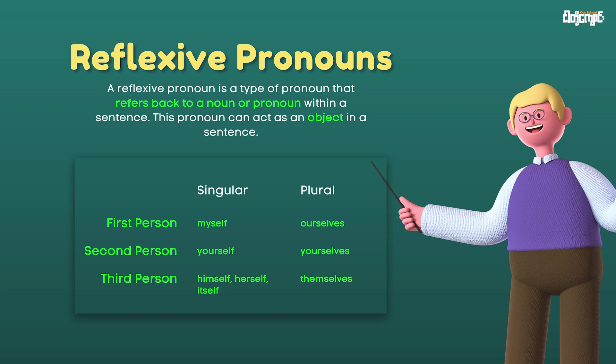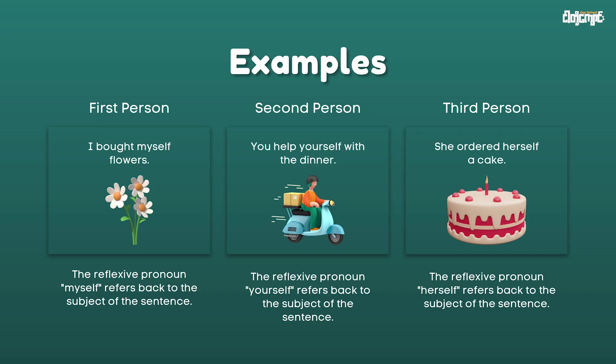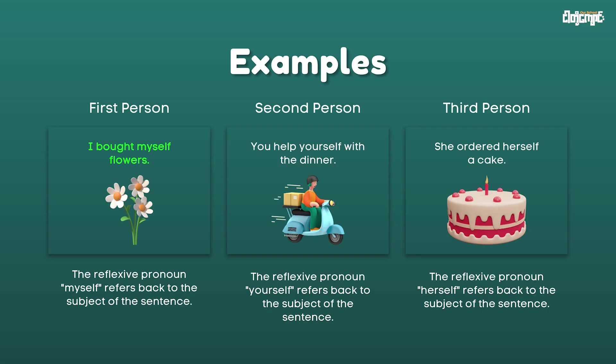A reflexive pronoun can be used as the object when the subject and object refer to the same person. For example: I bought myself flowers. Here, the first person pronoun 'I' is the subject and 'myself' is the reflexive pronoun as the object.